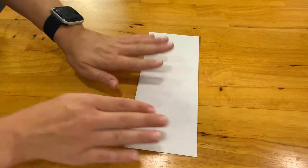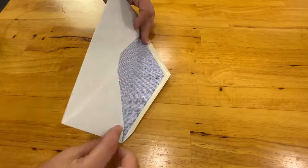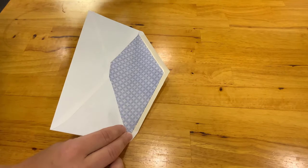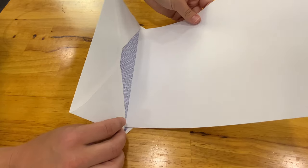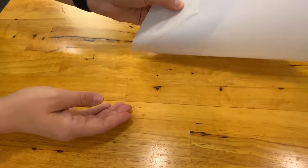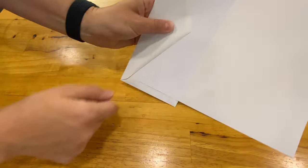So first you take your envelope and lay it face up. You want the triangle to point toward the paper that you're trying to fold. You take your piece of paper and you seat it in that crease and shut it so when I turn it over you can see the edge of the envelope is there.